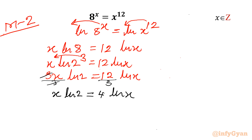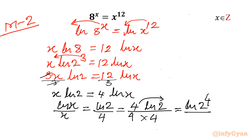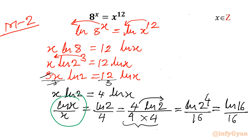Dividing both sides by 3 gives x·ln 2 = 4·ln x. Rearranging: (ln x)/x = (ln 2)/4. Multiplying numerator and denominator by 4: (ln 2)/4 = (4·ln 2)/16 = ln(2⁴)/16 = ln 16/16. So (ln x)/x = (ln 16)/16, and by comparison x = 16.